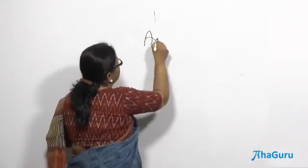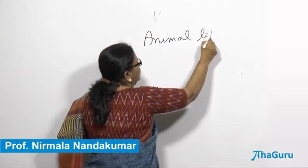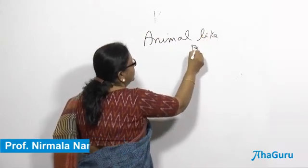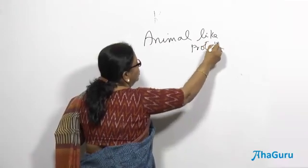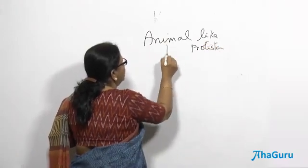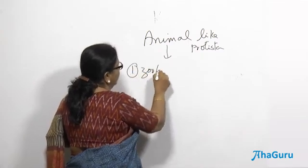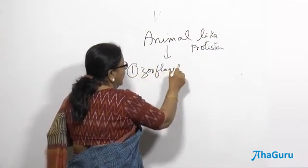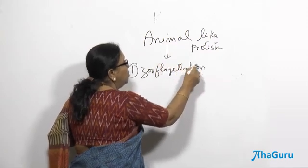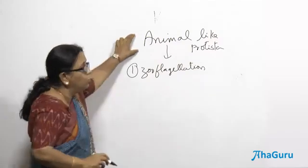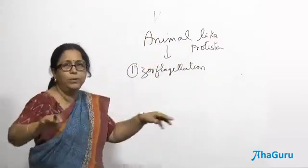In animal-like protists, there are many groups. We will discuss each group one by one. Animal-like protists are divided into separate groups based on their locomotory structures. Let us look at animal-like protists first.